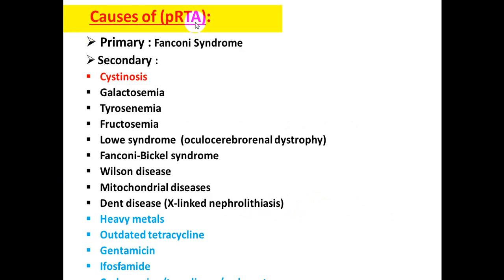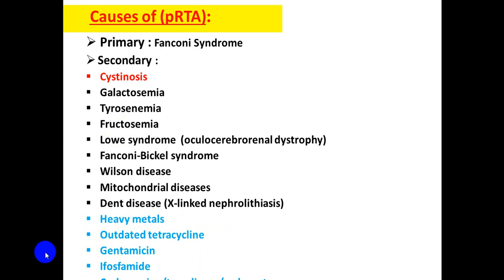The causes of proximal RTA include primary causes or secondary causes due to underlying metabolic disorders like cystinosis, galactosemia, tyrosinemia, fructosemia, and Lowe syndrome, or due to heavy metal intoxications or drugs like outdated tetracycline, gentamicin, ifosfamide, and cyclosporine.